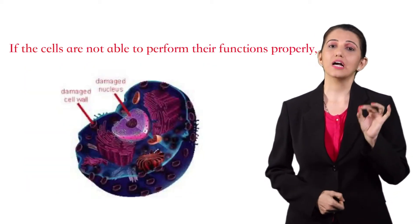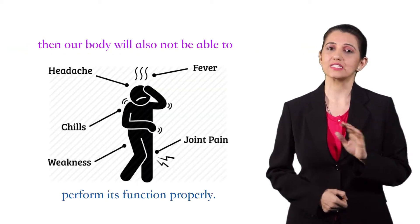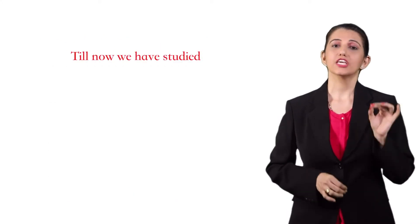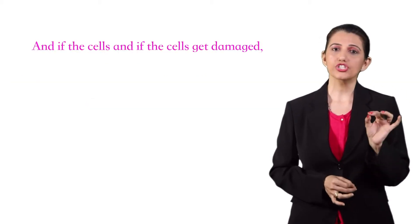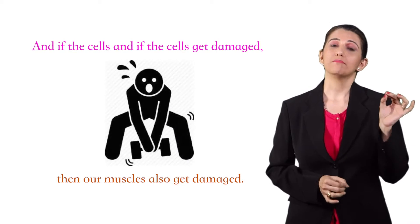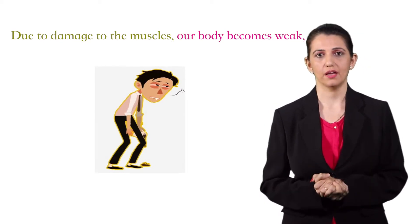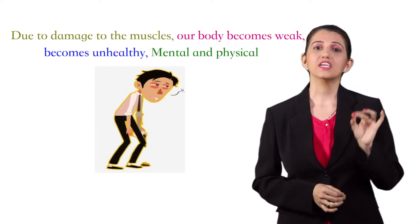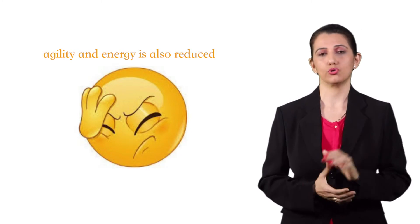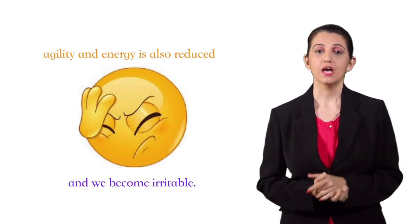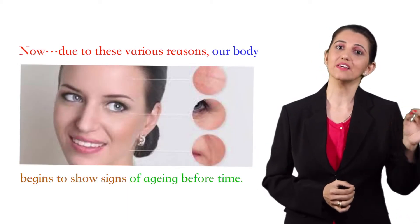If the cells are not able to perform their functions properly, then our body will also not be able to perform its function properly. If the cells do not get the required nutrition, they get damaged, and if the cells get damaged, then our muscles also get damaged. Due to damage to the muscles, our body becomes weak, becomes unhealthy. Mental and physical functioning ability is reduced, agility and energy is also reduced and we become irritable. Due to these various reasons, our body begins to show signs of aging before time.